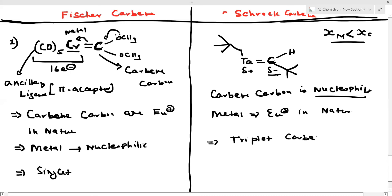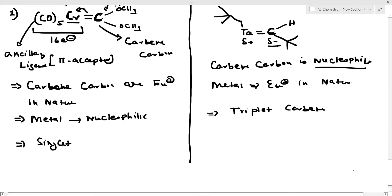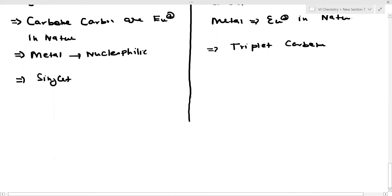Now I am going to differentiate between the two types. In Fischer carbene, the carbene carbon is singlet in nature — this is a singlet carbene. In Schrock carbene, the carbene carbon is triplet in nature — this is a triplet carbene.